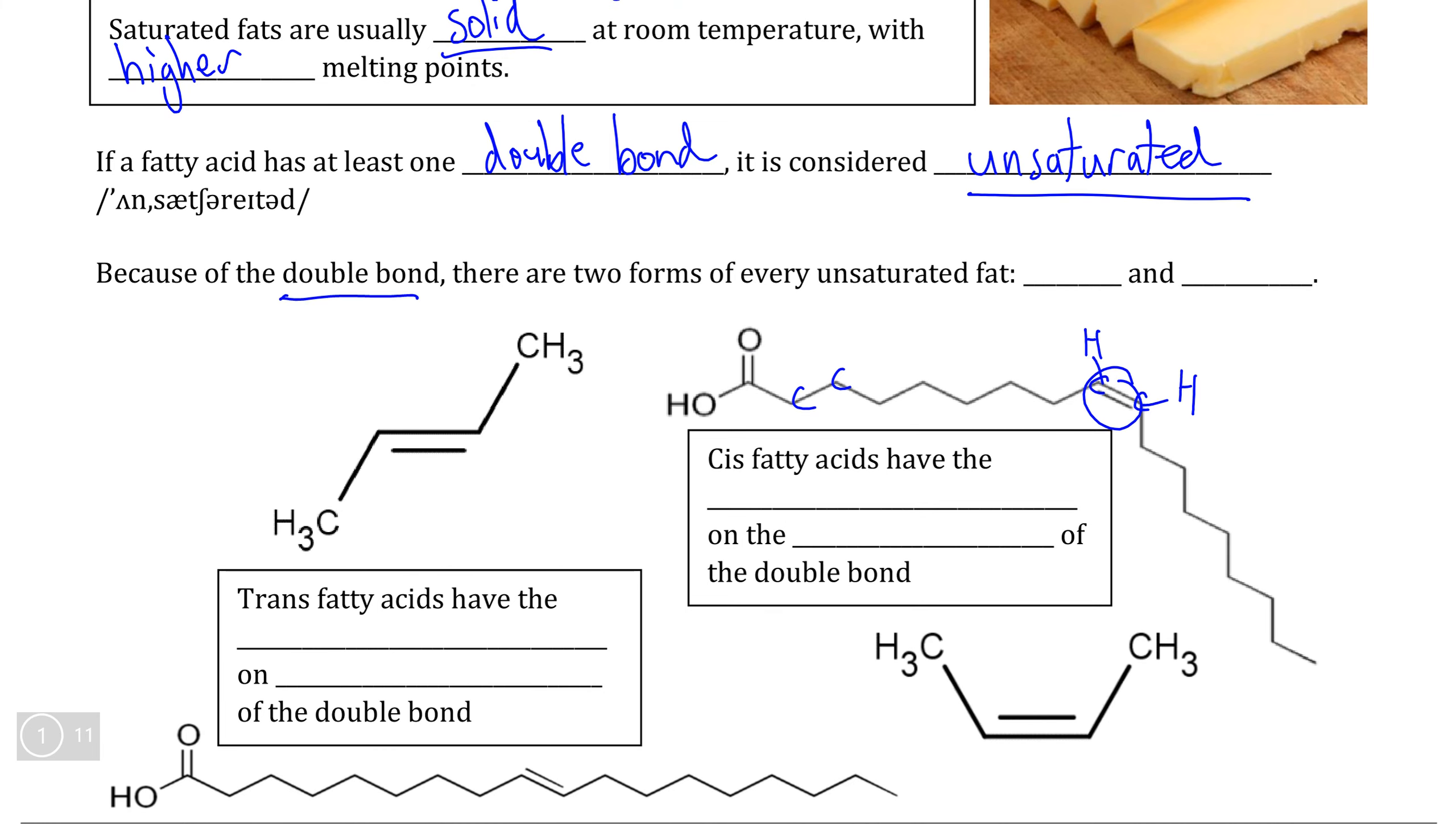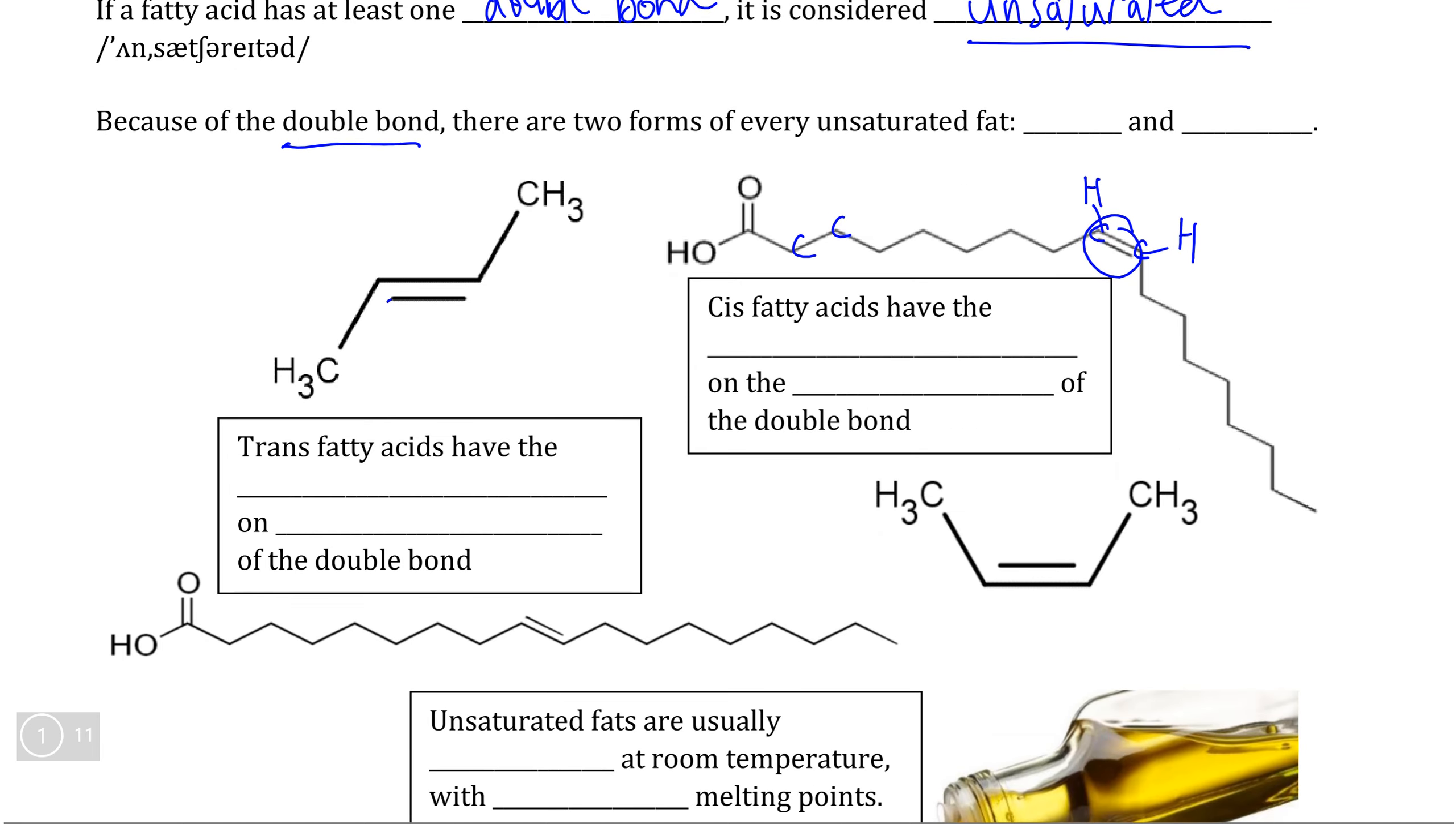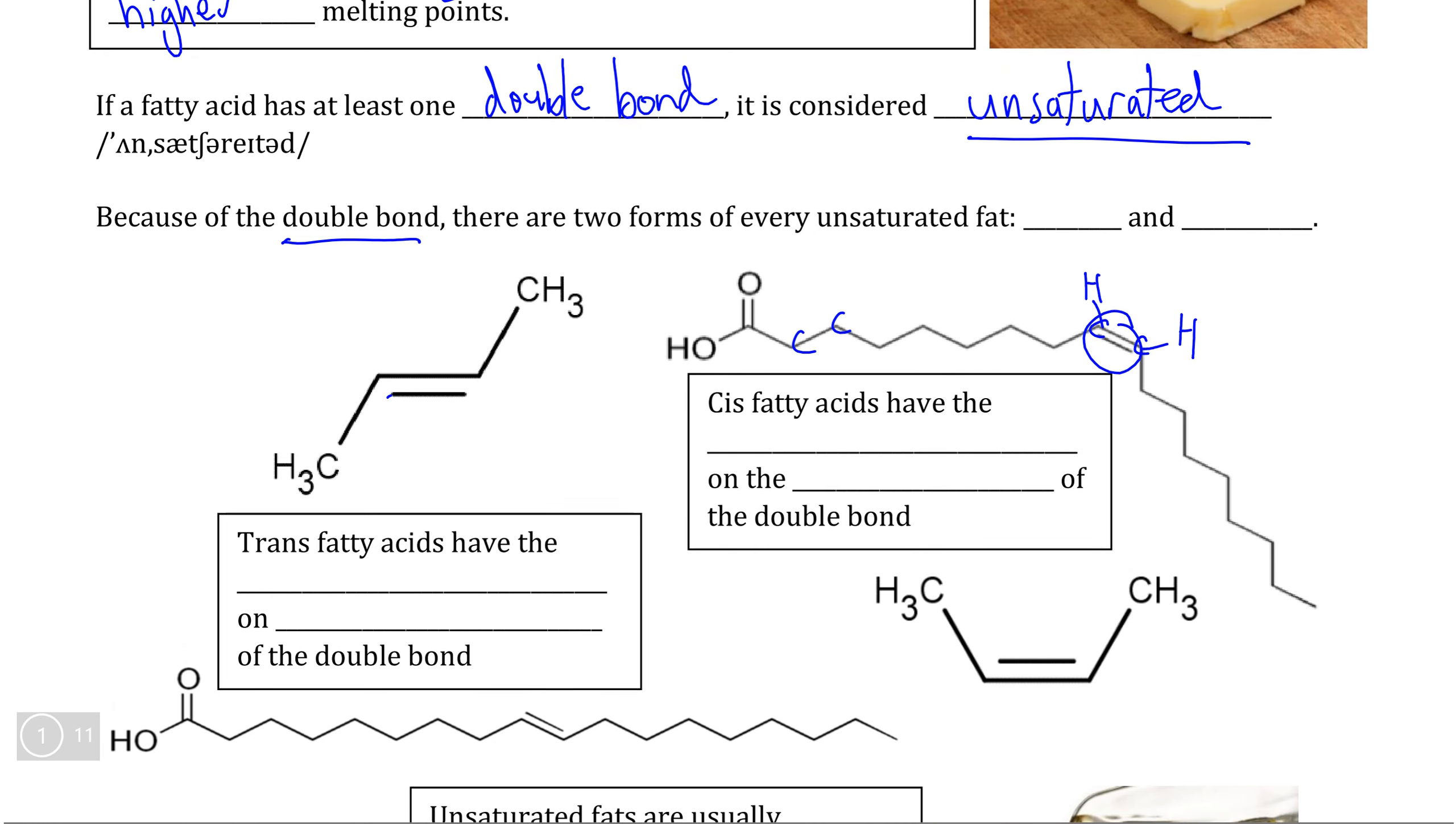For those that know anything about double bond chemistry, double bonds introduce a rather interesting phenomenon in that a double bond in a molecule means that there will be two distinct forms of that molecule. And for people with a good nutritional background, you may have heard of these before. There is what we call the cis form and what we call the trans form.